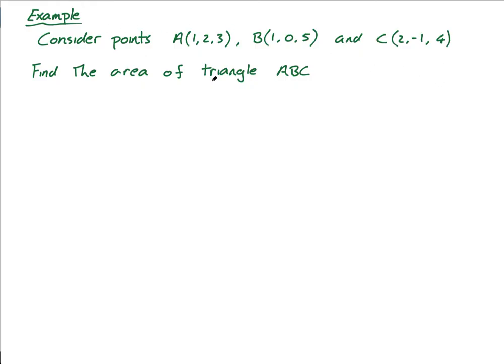So it says consider points A(1,2,3), B(1,0,5), and C(2,-1,4). Find the area of triangle ABC. So I want to draw this up because there's a very common mistake that people make is that they use these as the vectors. These aren't vectors, these are points. So let's say we have A, we have B, and we have C. And we're trying to find the area of this triangle.